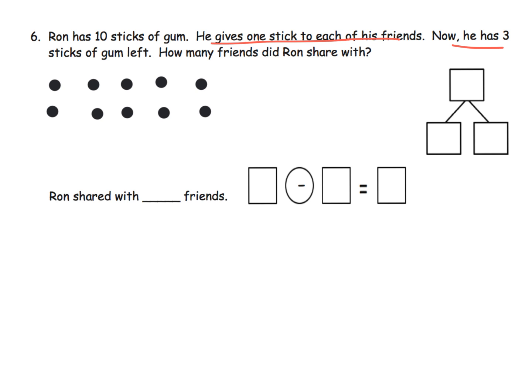Now he has 3 sticks of gum left over. So how many friends did Ron share with? Well, we know we've got the 10 because that's what our dots here are. We can't show how many sticks he gave away because we don't know that number yet. But he does have 3 sticks of gum left over, so I'm going to circle 3 sticks of gum that are left over. That means these are all the sticks of gum that he gave away, and that's the stuff that we're going to cross off.